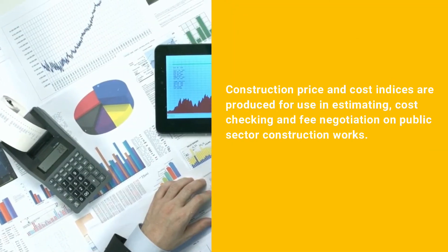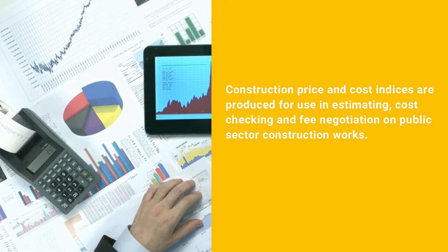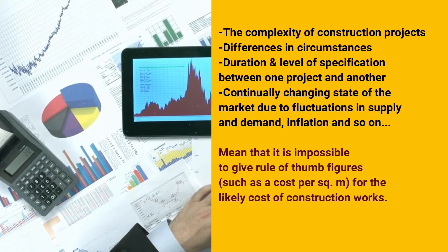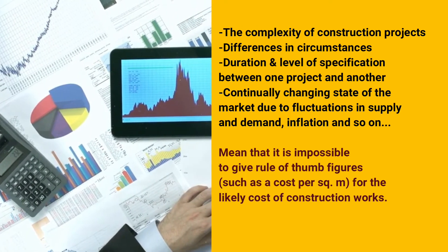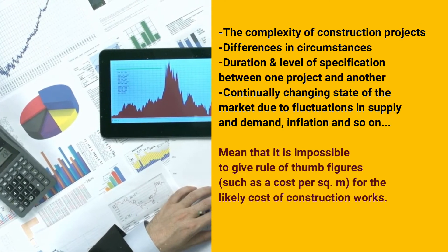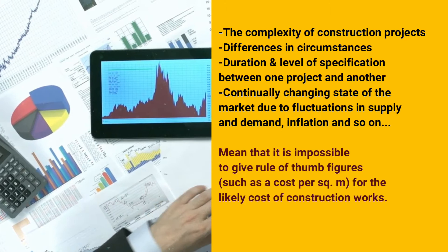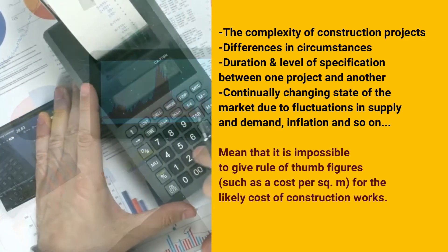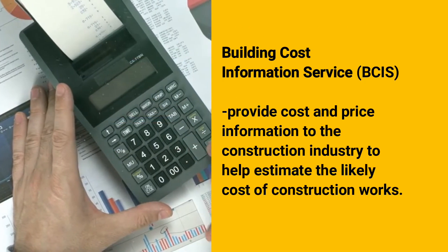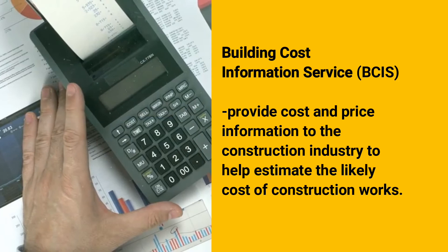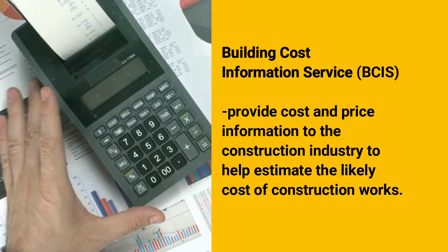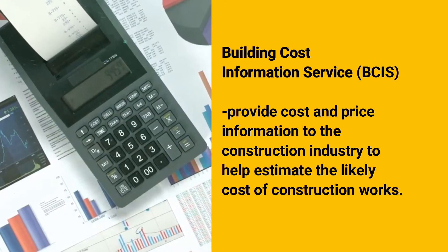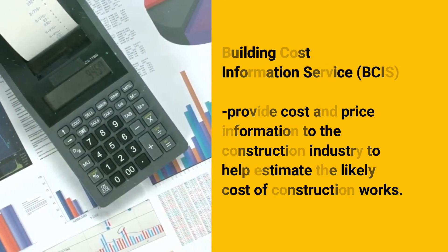Construction price and cost indices are produced for use in estimating, cost checking, and fee negotiation in public sector construction works. The complexity of construction projects, the differences in circumstances, duration, and level of specification between one project and another, and the continually changing state of the market due to fluctuation in supply and demand, inflation, and so on, mean that it is impossible to give straightforward figures such as a cost per square meter. Private sector organizations such as the Building Cost Information Service provide cost and price information to the construction industry to help estimate the likely cost of construction work.